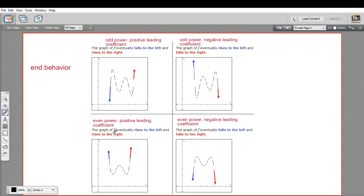If you've got an even power of that highest power of x, if the coefficient is positive, both are going to be pointing up. If it's negative, both are going to be pointing down. So that's end behavior.